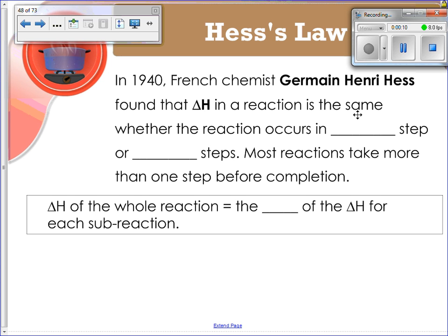In 1940, French chemist Germain-Henri Hess found that delta H in a reaction is the same whether the reaction occurs in one step or many steps. Most reactions take more than one step before completion. Delta H of the whole reaction is the sum of the delta H's for each sub-reaction.